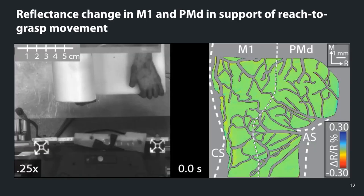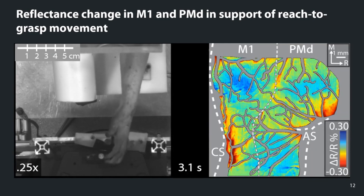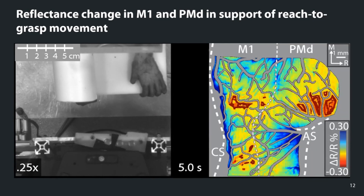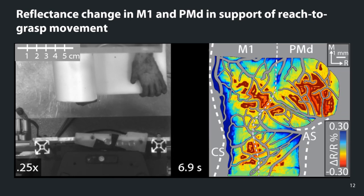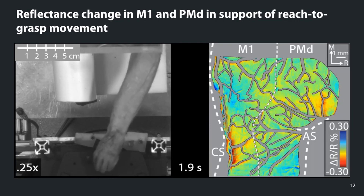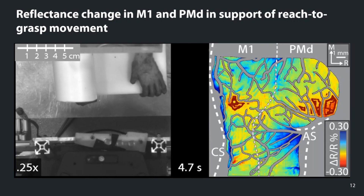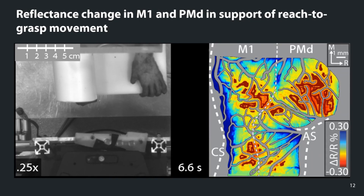Here is a video showing the monkey performing the reach-to-grasp task on the left, with the corresponding intrinsic signal optical imaging frames on the right. In the later frames, there is an increase in the negative reflectance change, indicating an increase in deoxyhemoglobin, and the increase in neural activity is shown in the red pixels. Playing it again, you can see that those red pixels don't show up until the monkey has completed its movement.